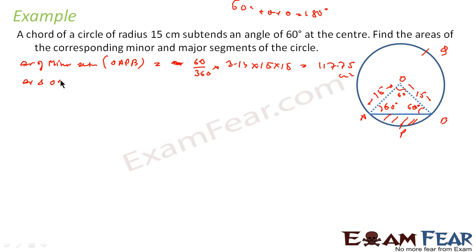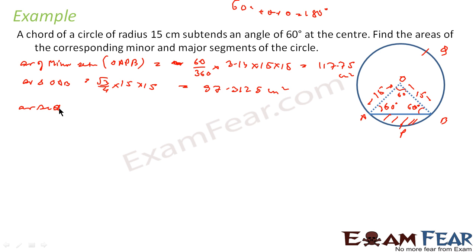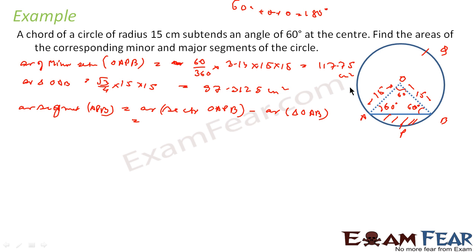Area of triangle OAB equals (√3/4) × side² = (√3/4) × 15 × 15, which comes out to 97.3125 cm². Therefore, area of minor segment = area of minor sector − area of triangle OAB = 117.75 − 97.3125 = 20.4375 cm². This is the area of the minor segment.